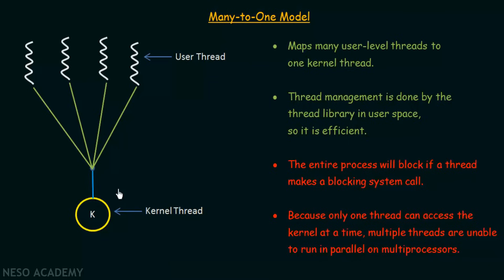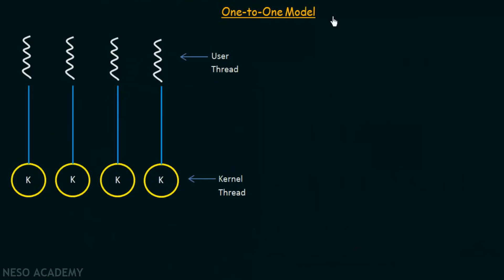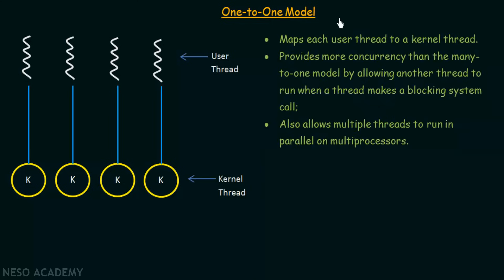Now let us go to the next model and see how it is better and whether it has any limitations as well. The second model is the one-to-one model. From the name we can understand that one user thread is mapped to exactly one kernel thread. Unlike the many-to-one model, here one user thread is mapped to only one kernel thread.